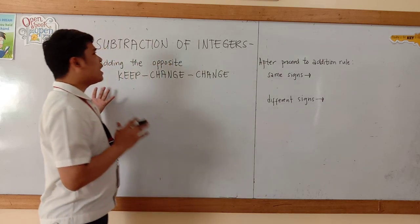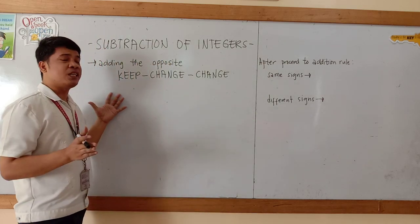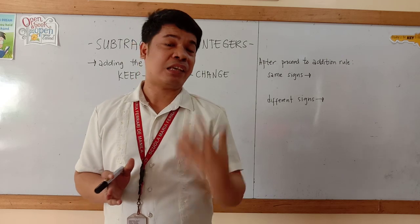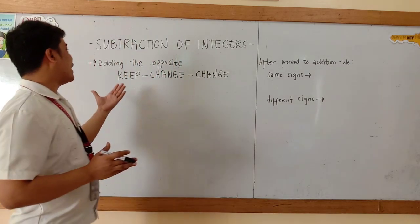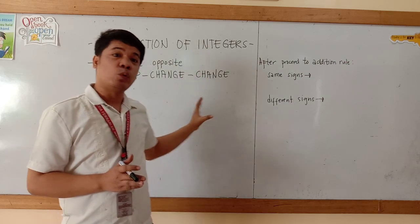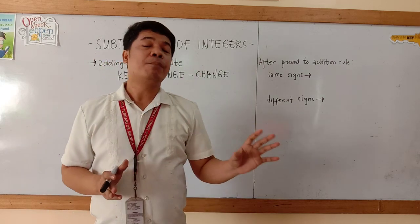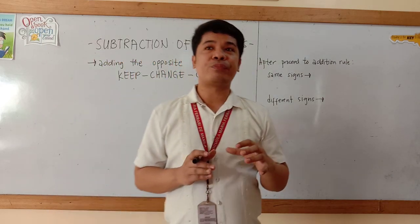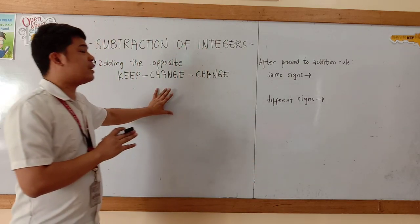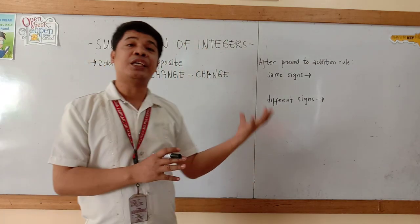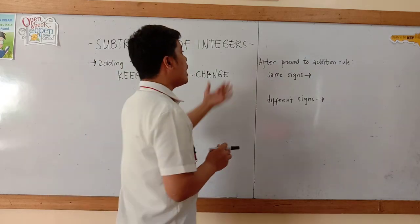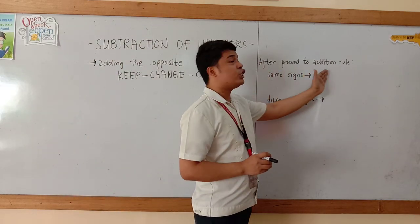Now Maka Friendships, in subtracting integers, we need to follow these techniques. We have here: keep, change, change. This is the first step that you will do before you will solve the problem. And then after changing the signs of the given integers, we need to proceed to the addition rule.